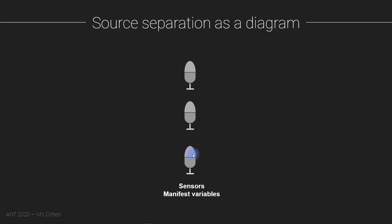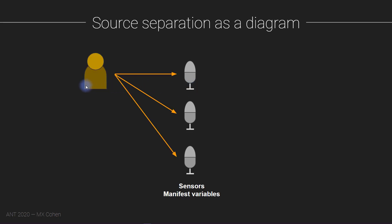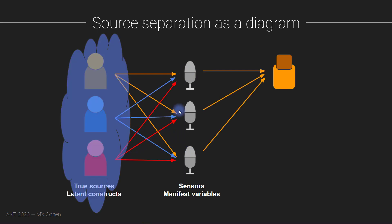These microphones represent sensors — the manifest variables. These are things in the universe that we can actually measure and attach numbers to, but they are not the things we are fundamentally interested in. Instead, we are fundamentally interested in these sources — the latent constructs which cannot be directly measured, but which project to all of these sensors simultaneously. What we want to do is find a way to weight the different sensors such that the weighted combination gives us a decent approximation of these latent constructs, these true sources.